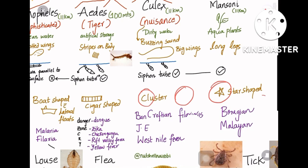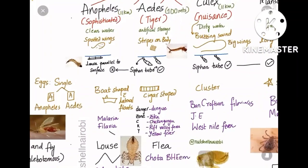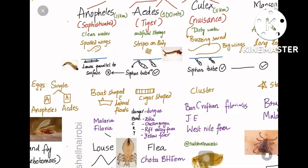The egg shapes: Anopheles eggs are boat-shaped with lateral floats, whereas Aedes (the tiger mosquito) lays cigar-shaped eggs — stripes are drawn on the cigar to help you remember the tiger stripes. Culex lays eggs in a cluster and Mansonia in a star-shaped format.